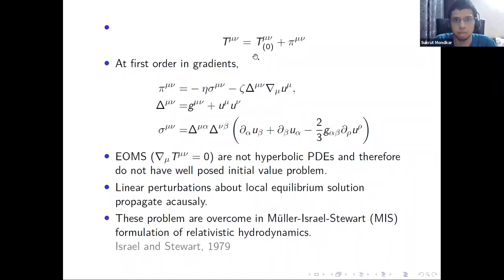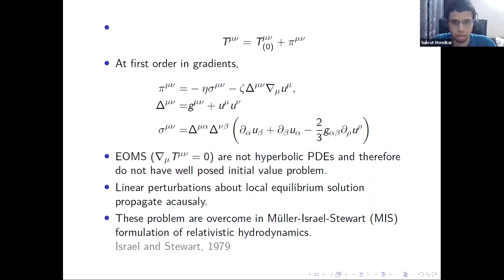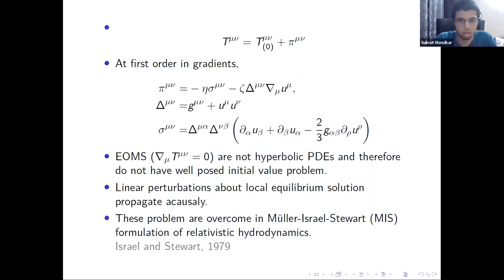The energy-momentum tensor can be decomposed into a perfect fluid part T^{mu nu}_0 and a dissipative part pi^{mu nu} containing viscous corrections. pi^{mu nu} contains gradients of U^mu at different orders. At first order it corresponds to first-order gradients, and at second order there are additional terms. These come with transport coefficients: eta, called the shear viscosity, and zeta, called the bulk viscosity.